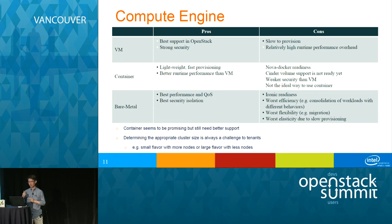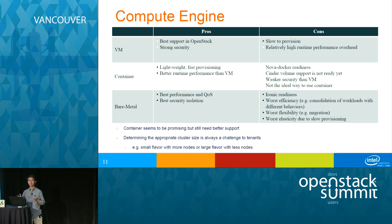There's another problem common to all three options: even with Sahara, tenants still need to determine the appropriate cluster size and what flavors to use. They can choose a larger flavor with fewer nodes, or smaller flavors with more nodes. It's not easy for tenants to make this decision — in many cases they're just developers or data scientists who want to use the service without worrying about underlying infrastructure complexity.